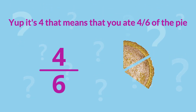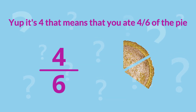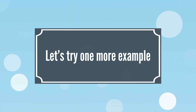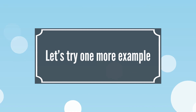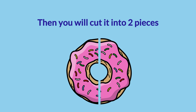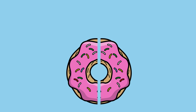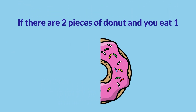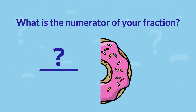That means you ate 4 sixths of the pie. Let's try one more example. If you and your friend have one donut to share, then you will cut it into 2 pieces. If there are 2 pieces of donut and you eat 1, what is the numerator of your fraction?